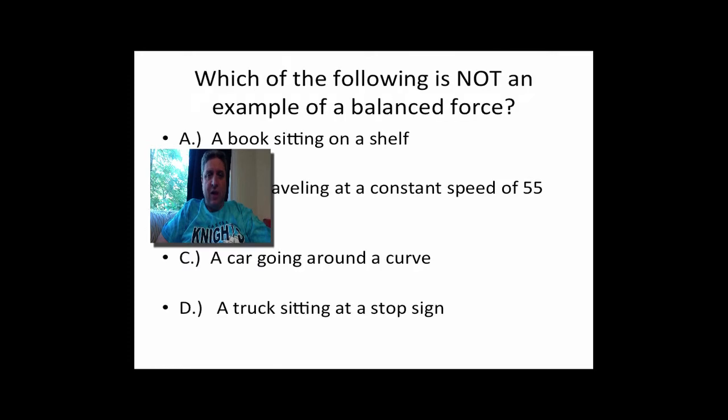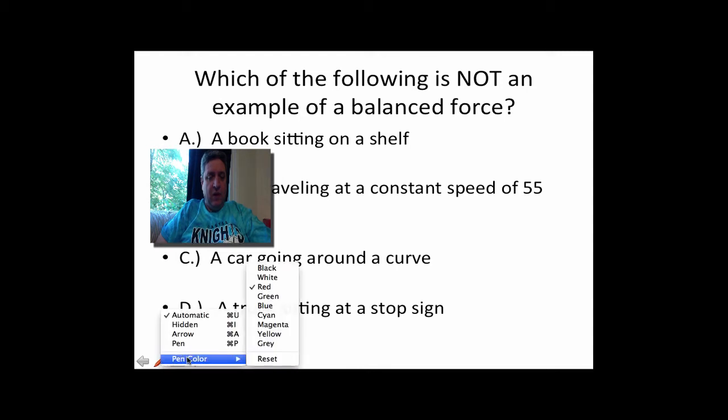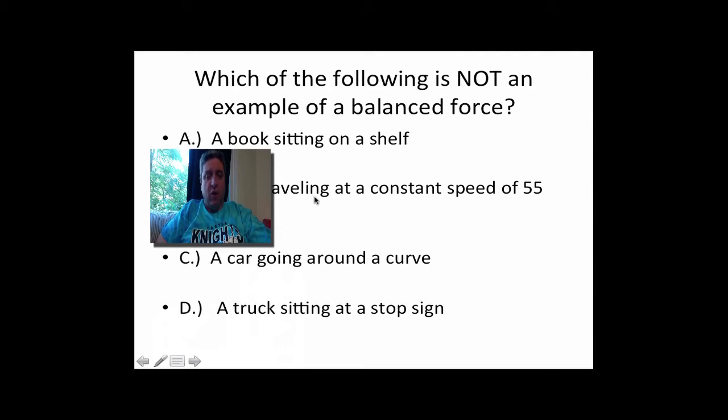So if we go to the next slide, it says which of the following is not an example of a balanced force? And we've got four options here. The first one says a book sitting on a shelf. The second one is a car traveling at a constant speed of 55 miles per hour. The third is a car going around a curve. And D is a truck sitting at a stop sign.